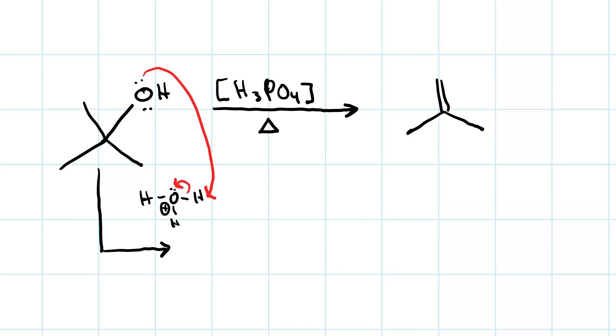Proton transfer to make the protonated alcohol first, followed by loss of a leaving group to give us the carbocation, which a water then deprotonates, to give our final simple alkene.